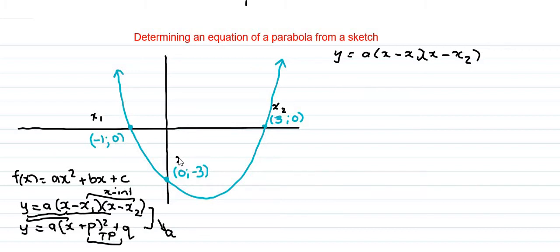This you'll call x, this you'll call y. And then just substitute. So as you can see, our y is -3. This gives us a as unknown. And then y is -3, x is 0, minus x₁ which is -1. And then in the second bracket, we see that x here is 0 minus x₂ which is 3. It's the second x-intercept.